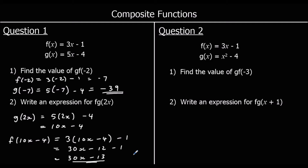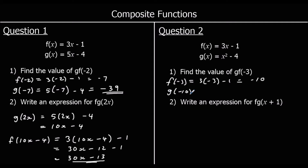Find the value of gf of negative 3. Put negative 3 into f: f of negative 3 is 3 times negative 3 minus 1, which is negative 9 minus 1, equals negative 10. Now put that into g: g of negative 10 is negative 10 squared minus 4, which is 100 minus 4, equals 96.